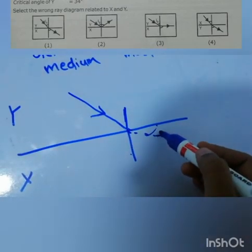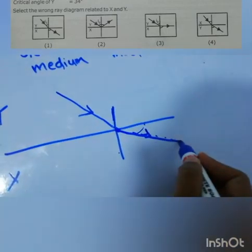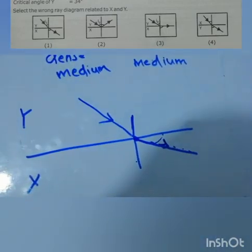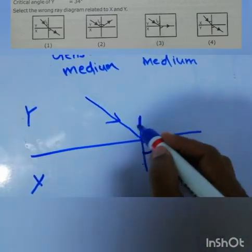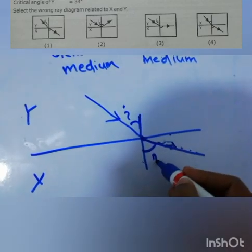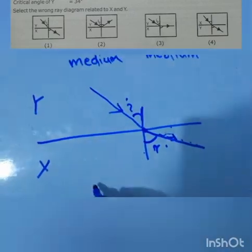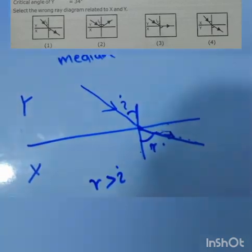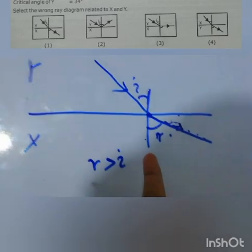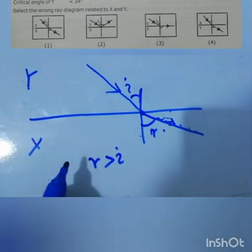Therefore, you can have a ray like this, that is away from the normal. Now you can mark this. You should mark the angle this side. So this is the I, this is the R. So if a ray is coming from denser to rarer, always R should be greater than I. So you can have a diagram like this. So this is one.